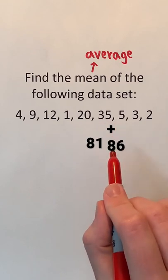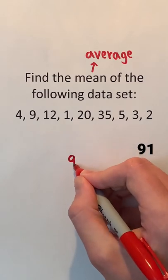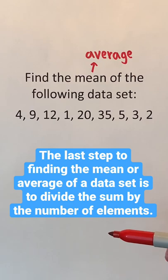81 plus 5 is 86, 86 plus 3 is 89, and 89 plus 2 is 91. The last step to finding the mean or average of a data set is to divide the sum by the number of elements.